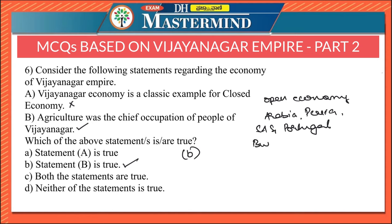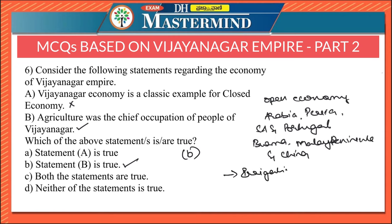Vijayanagara also had commercial contacts with Burma, the Malay Peninsula, and China on the east. Agriculture was the chief occupation of the people. Vijayanagara rulers provided a stimulus to its further growth by providing irrigation facilities — new tanks were built and dams were constructed across rivers like the Tungabhadra. Fernando Nunes also refers to the excavation of canals.